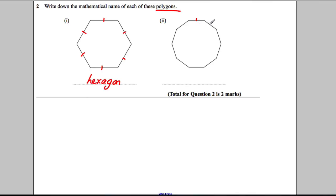And this shape's got one side, two side, three side, four side, five side, six side, seven side, eight side, nine side, ten side. So it's called a decagon.